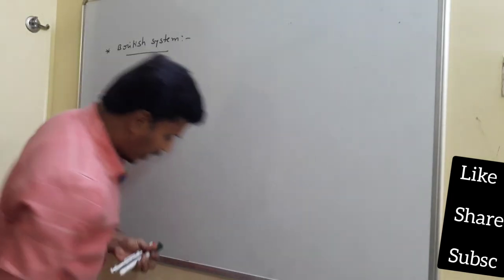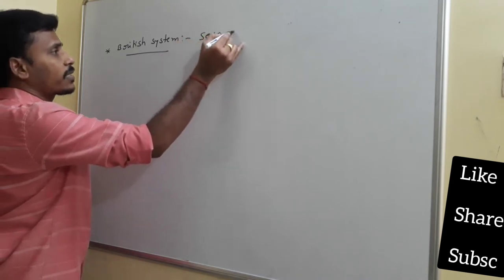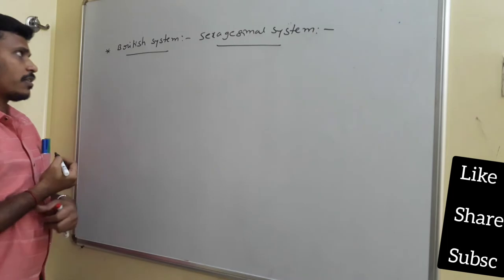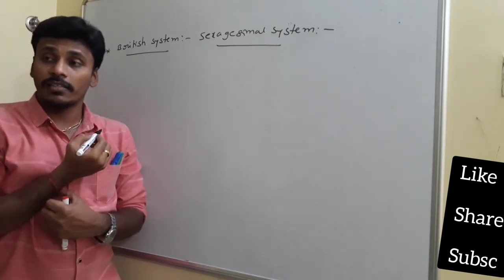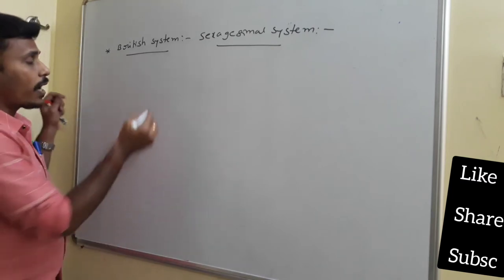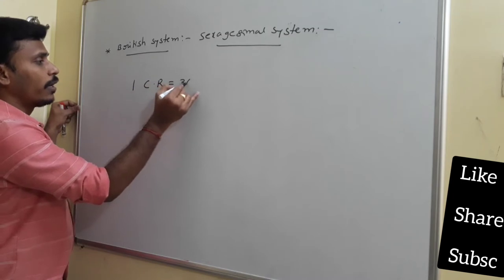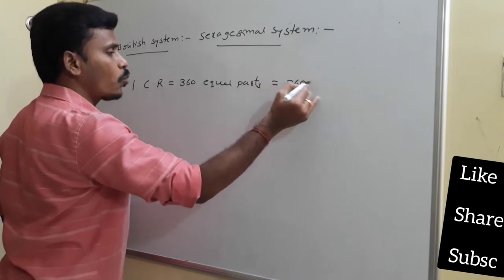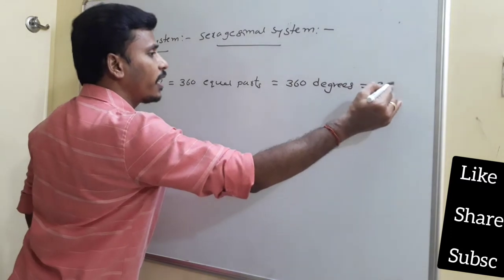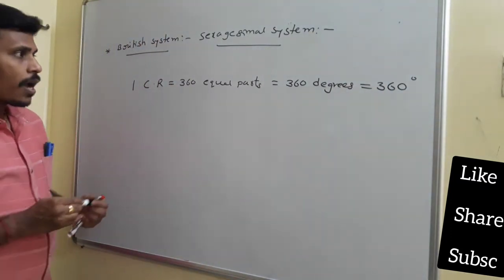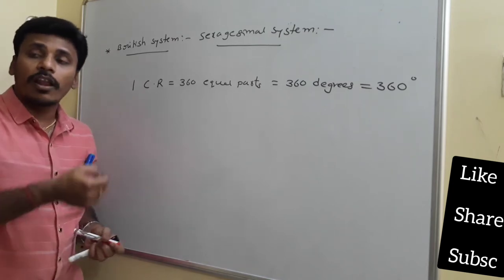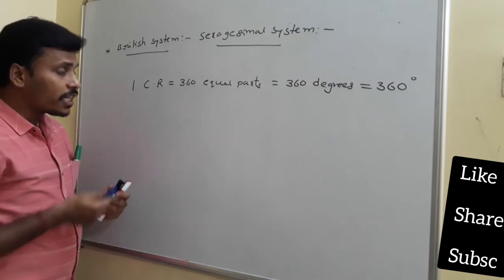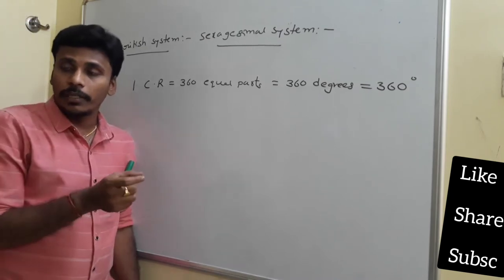This British system is also called the sexagesimal system because they divided everything with a base of 60. British system, sexagesimal system — some people also call it the English system. They divided one complete revolution into 360 equal parts and named each part as 1 degree, giving 360 degrees for a complete revolution. To measure very small angles less than 1 degree, they further divided each degree into 60 equal parts called minutes, indicated by a slash at the superscript bending toward the right.